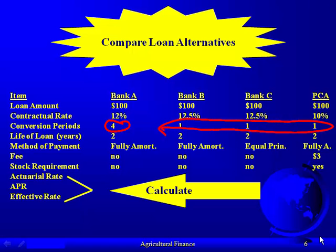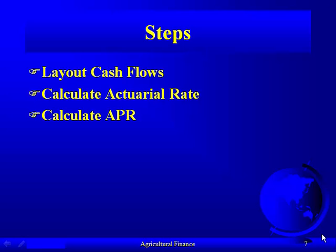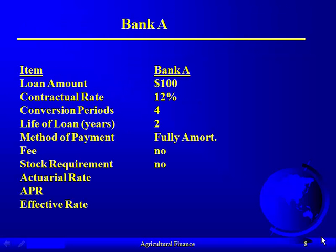The steps: first, you lay out the cash flows associated with each loan. Then you calculate the actuarial rate, which is simply the yield on that loan — the rate that makes the present value of cash inflows equal to the present value of cash outflows. Then we calculate the APR, which is just a simple multiplication. Then we plug that information into the formula to calculate the effective rate. We're going to focus on each bank individually, and at the end we'll have our comparison chart.